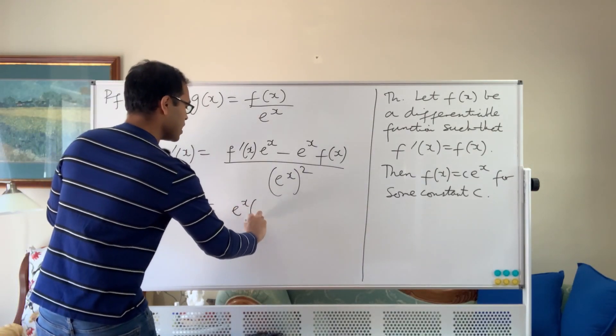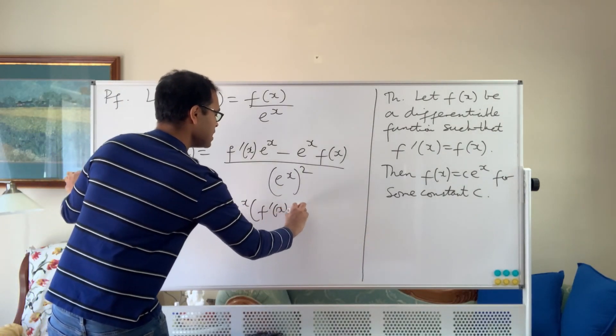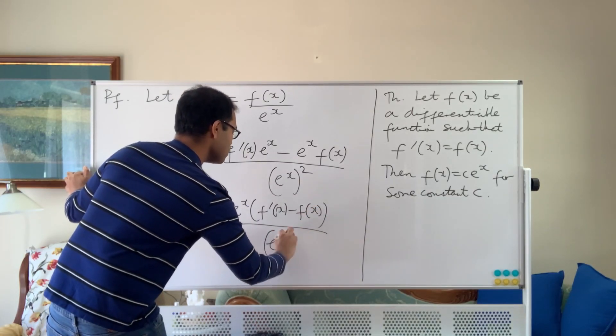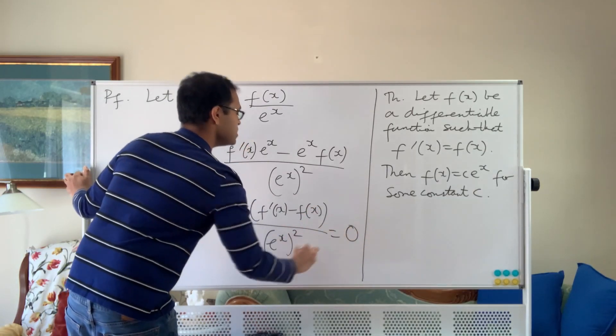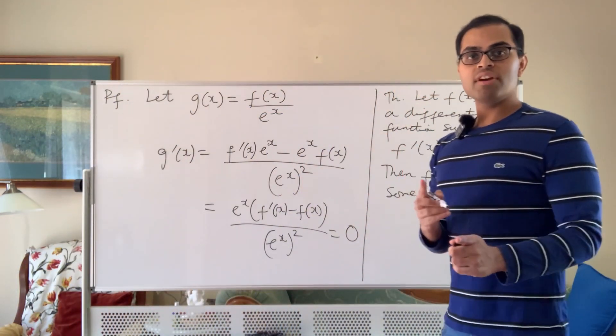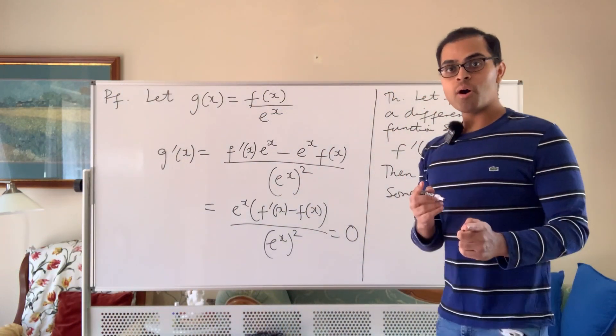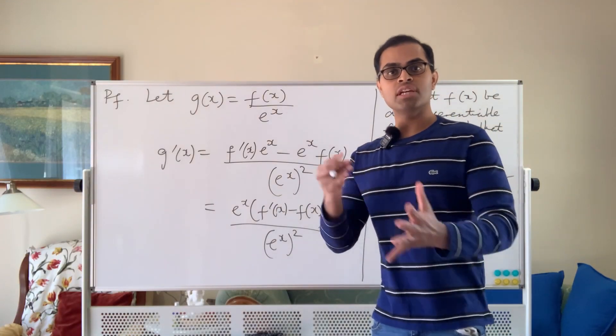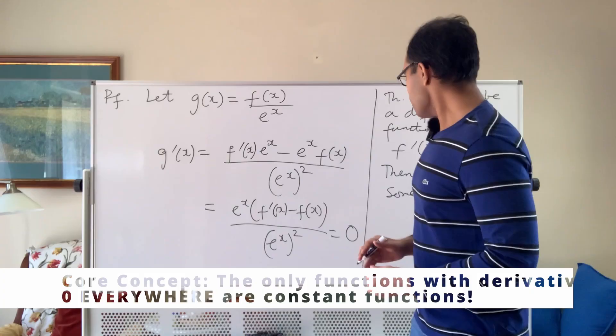we're just going to get zero on the top. We're just going to get e to the x times f prime of x minus f of x divided by e to the x squared, and we don't even need to simplify this. We just know this is zero because f prime is equal to f. So therefore, the derivative of g is equal to zero, and now we know this is a fact in calculus that if a function differentiates to zero, it has to be a constant.